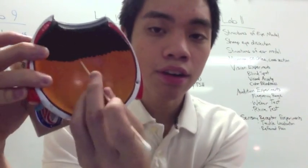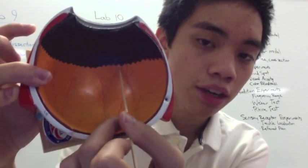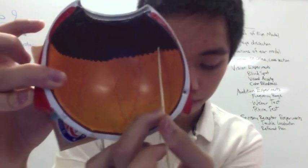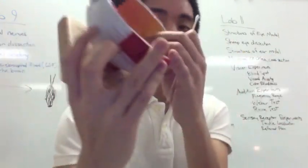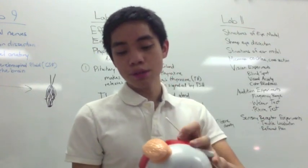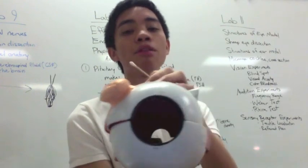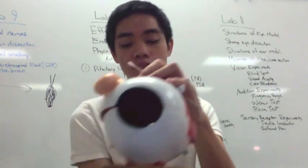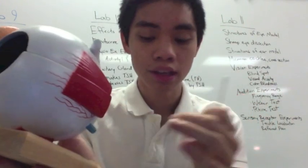You also have the ora serrata, which is the serrated part at the edge. Other things you need to know are your extrinsic muscles — the rectus and the oblique muscles of your eye — which help with eye movement. And of course you have the lens.